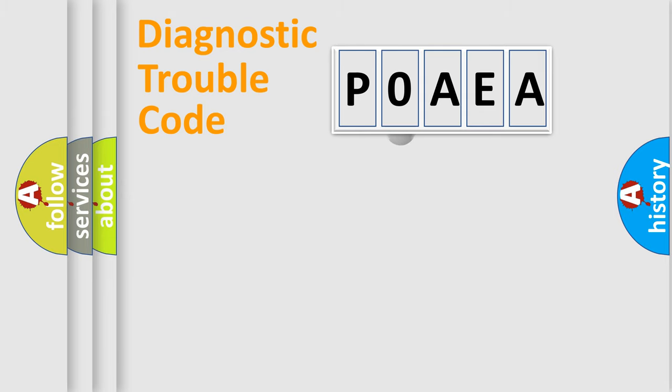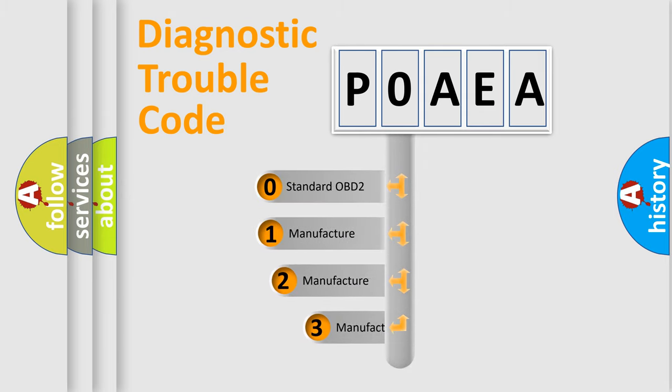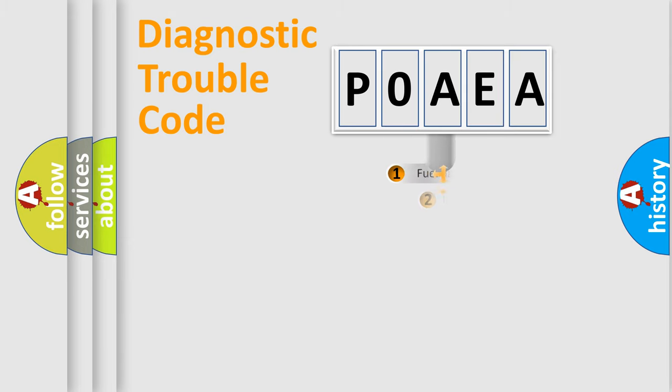This distribution is defined in the first character code. If the second character is expressed as zero, it is a standardized error. In the case of numbers 1, 2, or 3, it is a manufacturer-specific expression of a car-specific error.